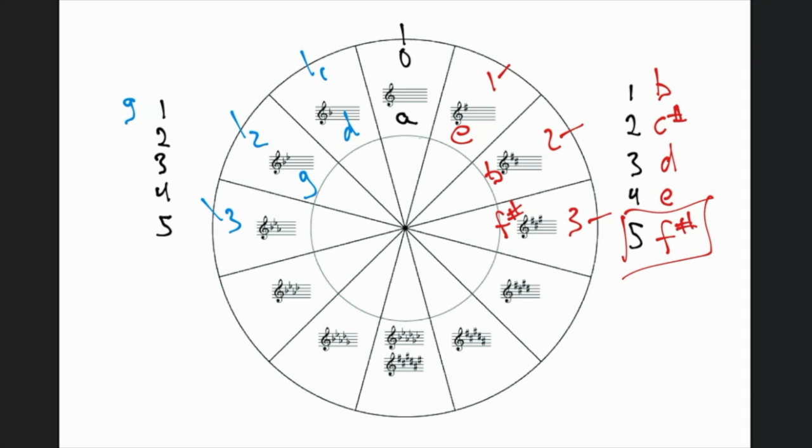Starting with G, we're going to go down five, reminding ourselves that there are three flats: B flat, E flat and A flat. G, F, E flat, D, C.